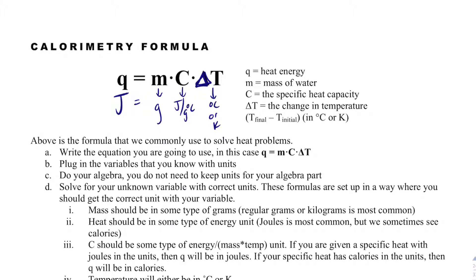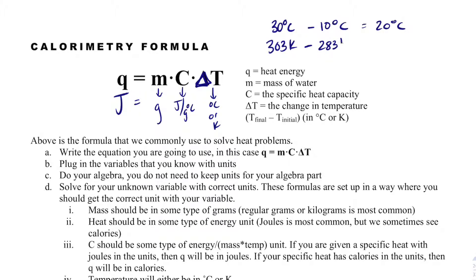To prove that, if I take 30 degrees Celsius minus 10 degrees Celsius, I get 20 degrees Celsius as my temperature change. In Kelvin, 30°C is 303 K, and 10°C is 283 K — the difference is still 20. That's why you can use degrees Celsius or Kelvin interchangeably for delta T.